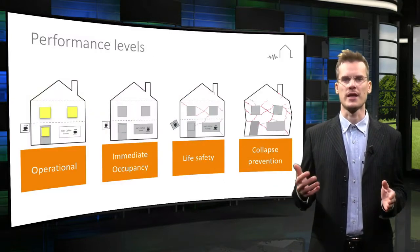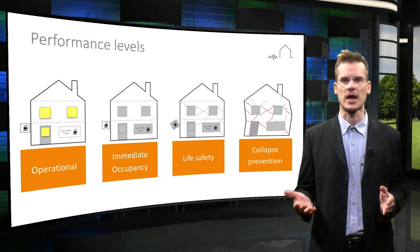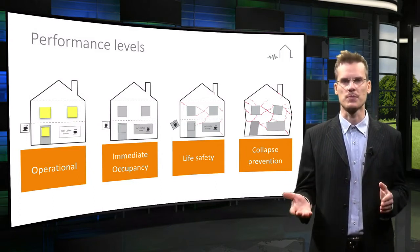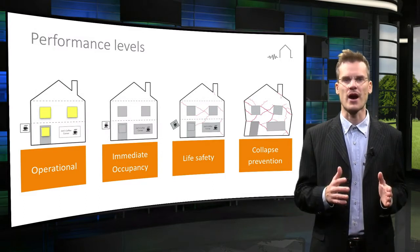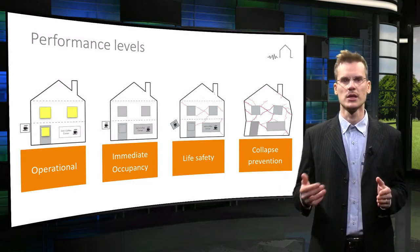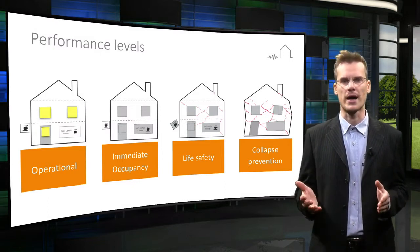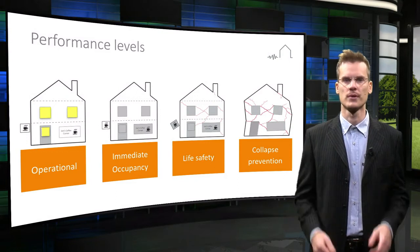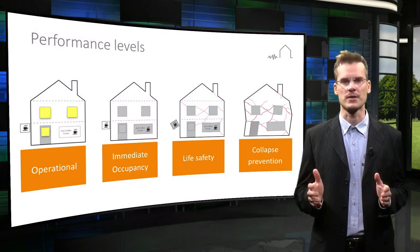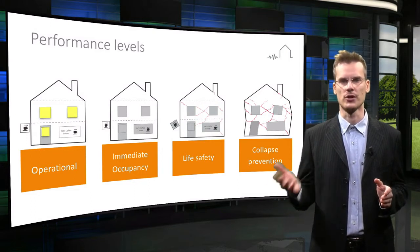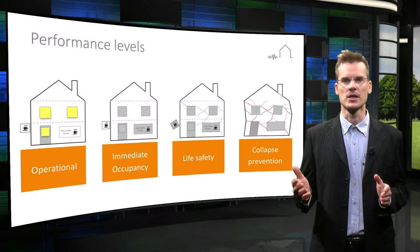Building performance levels are damage levels that a building could experience as a result of an earthquake, including both structural and non-structural elements. Four typical performance levels are: operational, meaning building operation can continue after the earthquake; immediate occupancy, where the building is safe to occupy but cannot be used for a short time; life safety, where the building suffers extensive damage but no threat to life; and collapse prevention, where the building is on the verge of collapse.